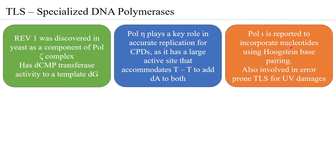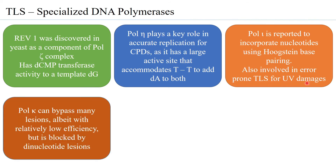Pol iota is reported to incorporate nucleotides using Hoogsteen base pairing — a non-Watson and Crick base pairing — giving it the ability to add nucleotides to the template and move ahead. It is also observed to be involved in error-prone TLS for UV damages. DNA polymerase kappa can bypass many lesions, not just thymidin dimers, but its efficiency is quite low and it is blocked by dinucleotides, so it is not able to handle thymidin dimers.